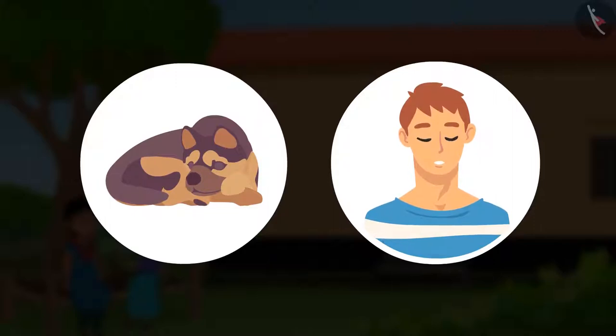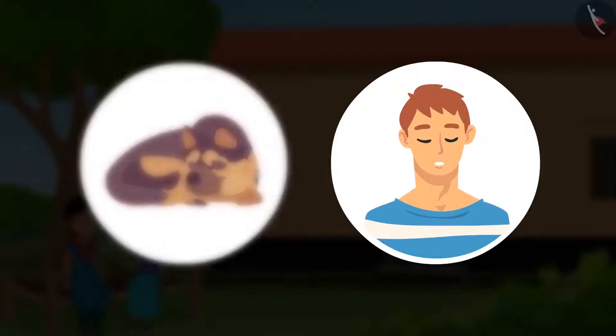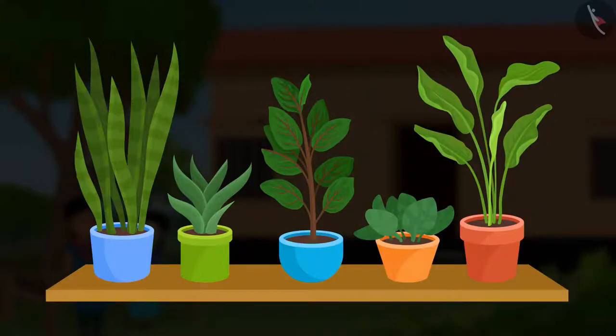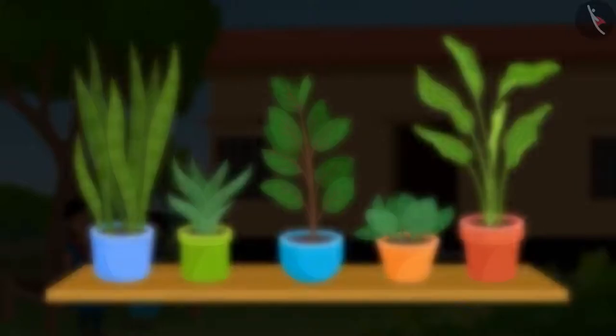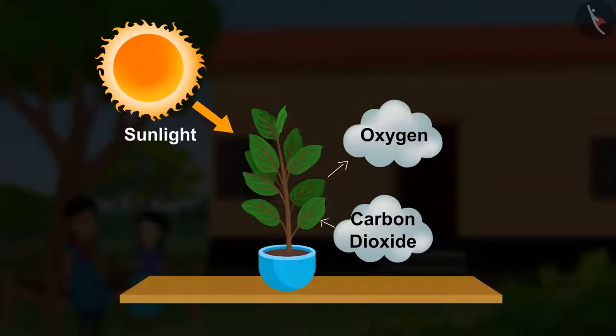In Chapter 1, Nutrition in Plants, you have learnt about photosynthesis. Green plants make their own food in the presence of sunlight. They take in carbon dioxide and give out oxygen. This is known as photosynthesis.